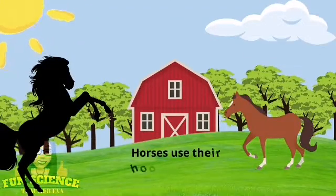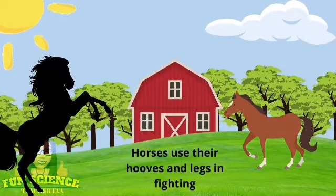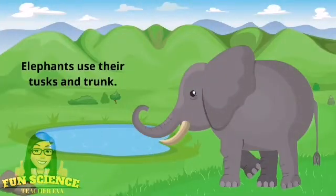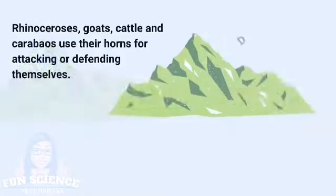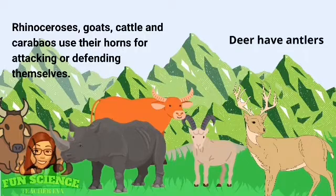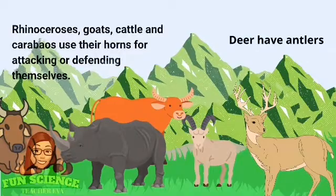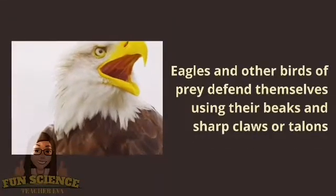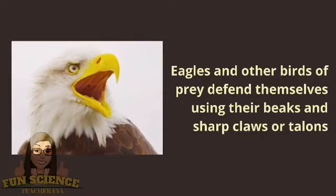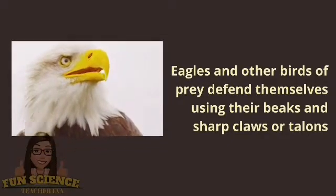Horses use their hooves and legs in fighting. Elephants use their tusks and trunk. Rhinoceroses, goats, cattle, and carabaos use their horns for attacking or defending themselves. Deer have antlers. Eagles and other birds of prey defend themselves using their beaks and sharp claws or talons.